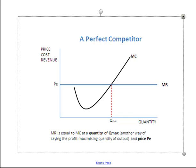There's a quantity indicated on the graph which I've described as Q max. Q max is another way of saying the quantity where the perfect competitor will maximize its profit, and it happens to coincide with the point where marginal cost cuts marginal revenue — or where marginal cost is equal to marginal revenue at the price PE.